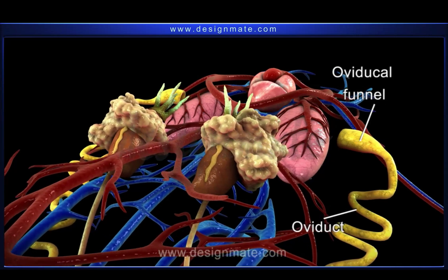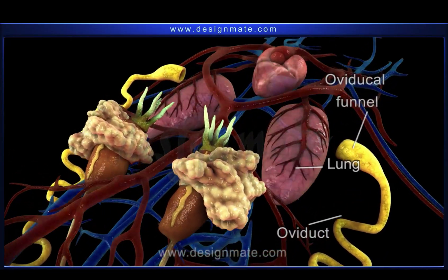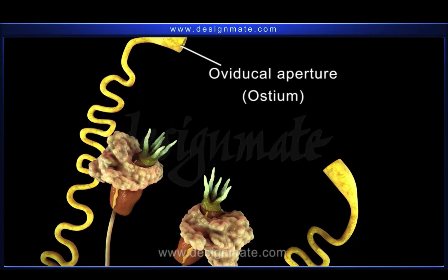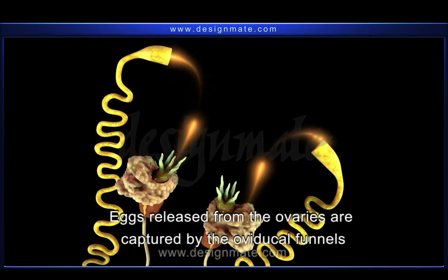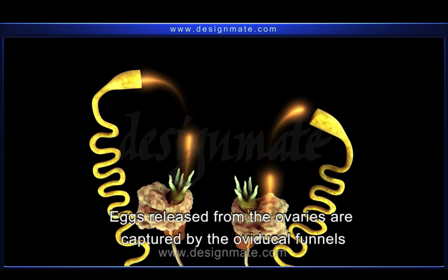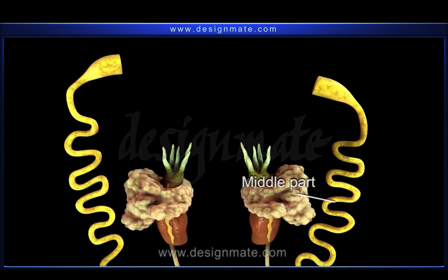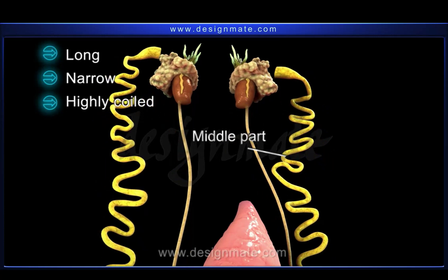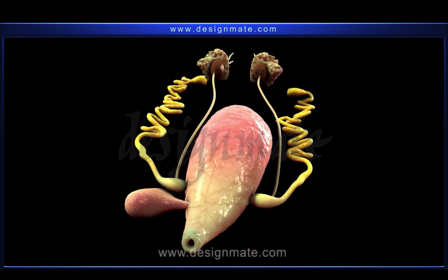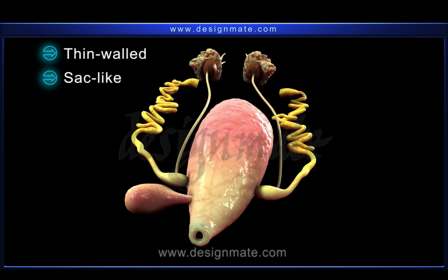The anterior free end forms a wide and fringed oviducal funnel located on the dorsal side of the lung. Its opening is called the oviducal aperture or ostium. The eggs are released from the ovaries into the body cavity and are captured by the oviducal funnels. The middle part of the oviduct is long, narrow, and highly coiled.